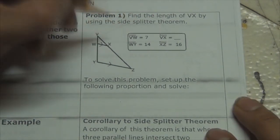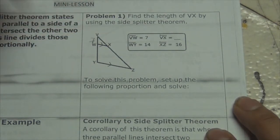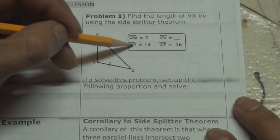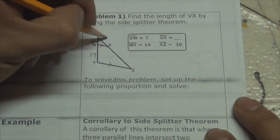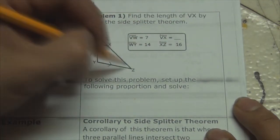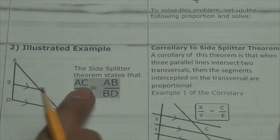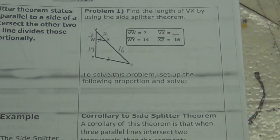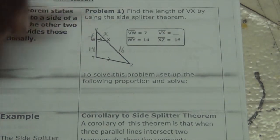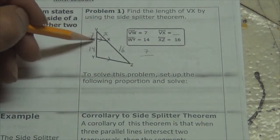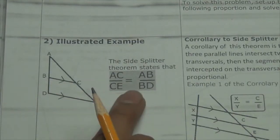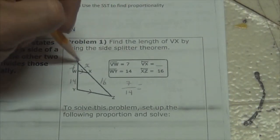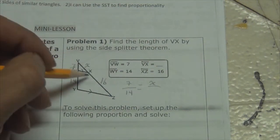So VW is 7, YW is 14, VX is unknown so I'm going to put X, and XZ is 16. Referring back to the side splitter theorem, I will say that VW, which is 7, is to the other part of the side WY, which is 14 — that equals VX, which is X, over XZ, which is 16.